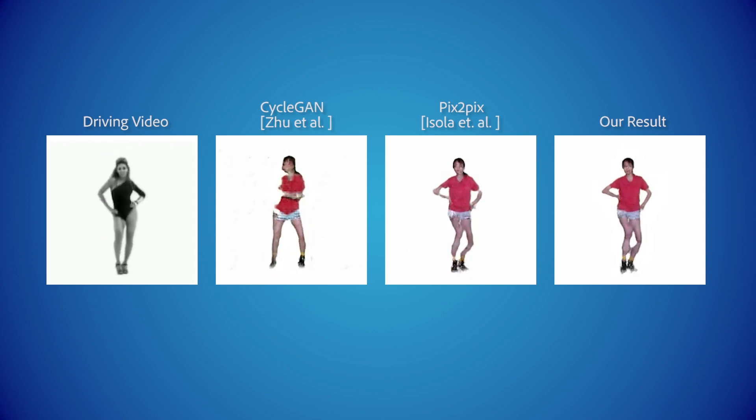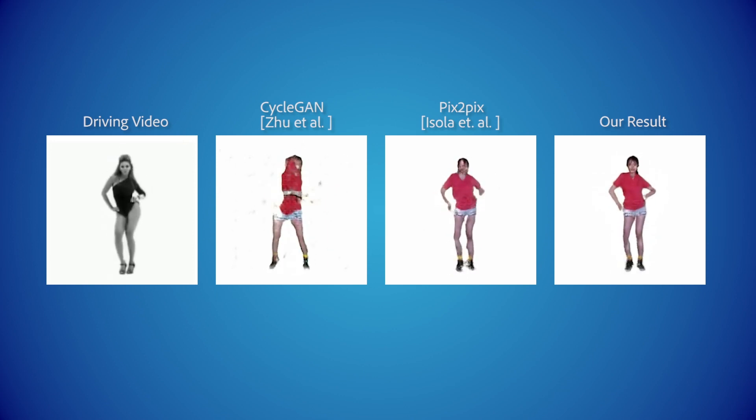We compare our results to CycleGAN and Pix2Pix, which are aimed at unpaired and paired image translation respectively. CycleGAN was trained to translate driving video frames into reference video ones, and the Pix2Pix network were extended to support our 3D parts confidence maps. Note that our results are cleaner and more coherent.